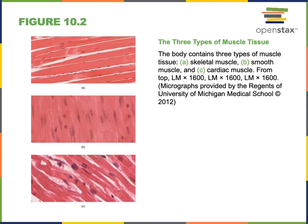There are three types of muscle tissue. The image in the top left shows skeletal muscle, in the middle we see smooth muscle, and the bottom left is cardiac muscle.